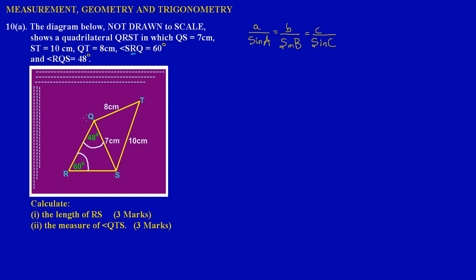In any triangle, the side and angle share a unique relationship. The angle at Q and the side RS that they're asking us to find share a unique relationship — we can call the side RS 'little q'. Likewise, the angle at R corresponds to side QS, which we call 'little r', and the angle at S corresponds to side RQ, which we call 'little s'.